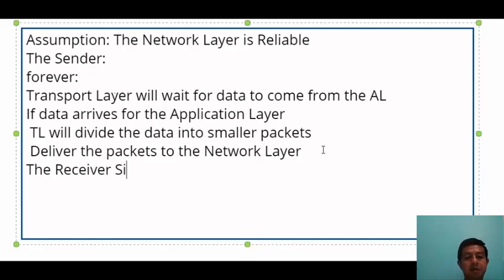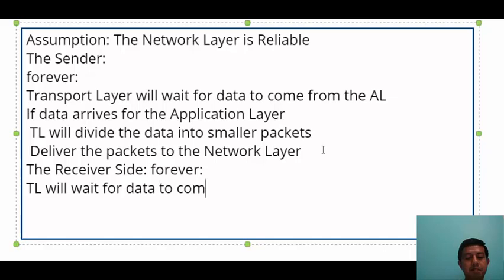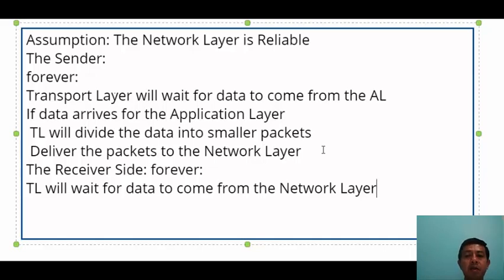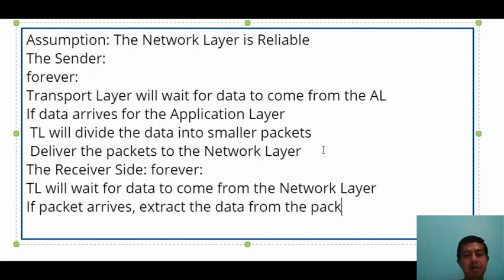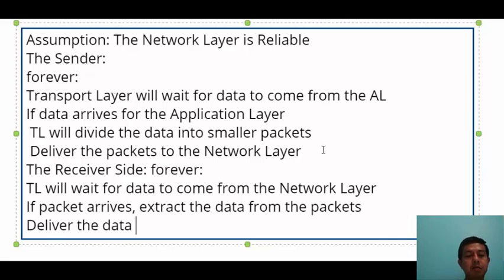On the receiver side, the transport layer also runs forever, waiting for data to arrive from the network layer. When a packet arrives, it extracts the data by removing the header information from the packet and then delivers that data to the application layer on the other side. These are the two simple operations for the receiver under the RDT 1.0 assumption of a reliable network layer.